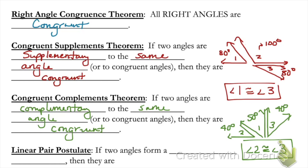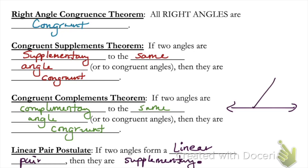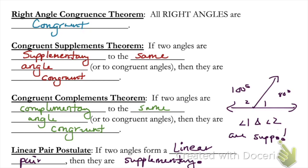The last postulate we're going to talk about is the linear pair postulate. If two angles form a linear pair, then they are going to be supplementary. Remember, a linear pair are two adjacent angles that form a straight line. So if angle one is 80 degrees and angle two is 100 degrees, they form that line and are adjacent, meaning they are supplementary. Any linear pair must be supplementary. This is not true going the other way, though — not all supplementary angles form a linear pair, because they may not be adjacent.